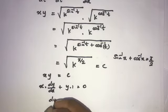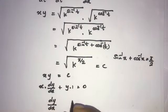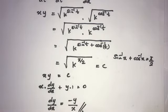Now we can isolate dy by dx. This equals minus y over x. This is the answer.